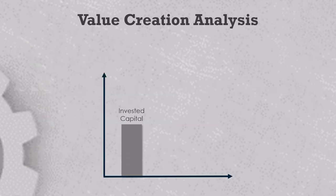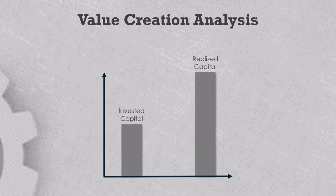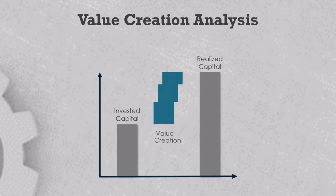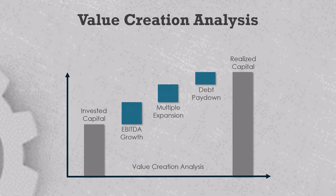Here's how it works. Let's say a GP invests $100 million into a portfolio company. After a few years, they sell it and return exit proceeds of $200 million. Value creation would simply be that $100 million difference. Value creation analysis, on the other hand, is an explanation of why that $100 million change happened. Here it's broken into EBITDA growth, multiple expansion, and some measurement of the company's debt level. You can see why it's called a value bridge — the three value drivers bridge the gap between invested and realized equity. So it makes a great chart, but there are a few problems with it.